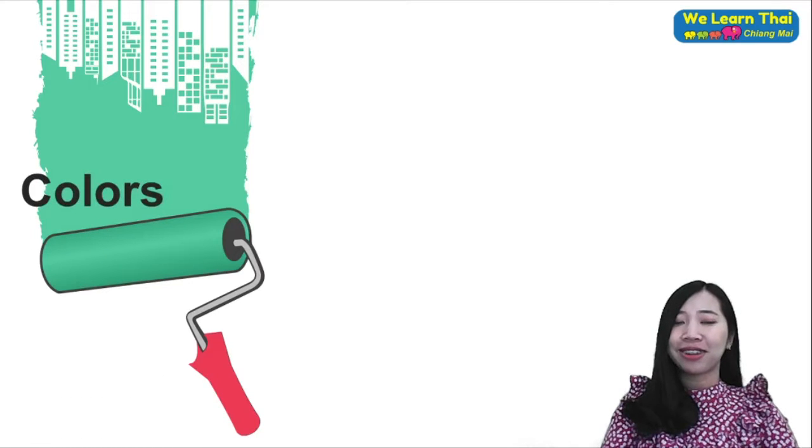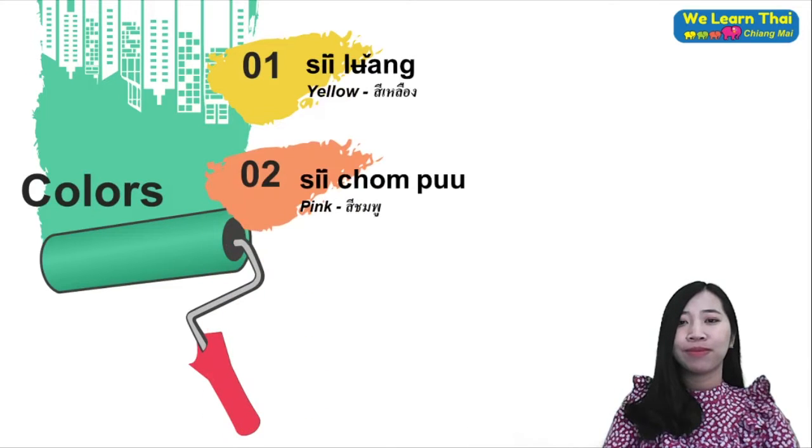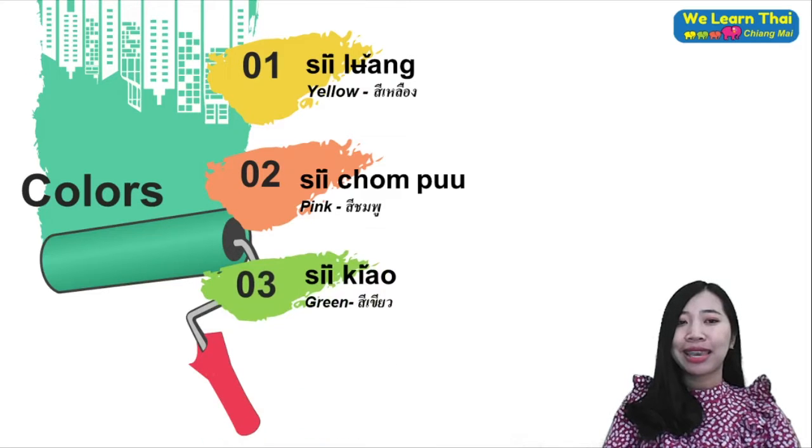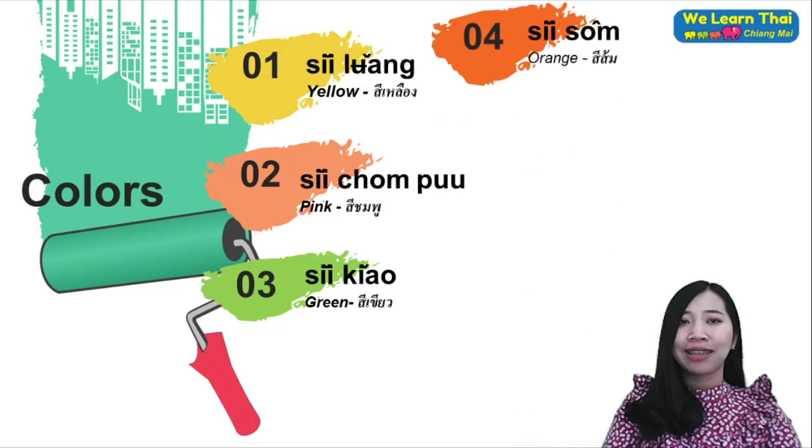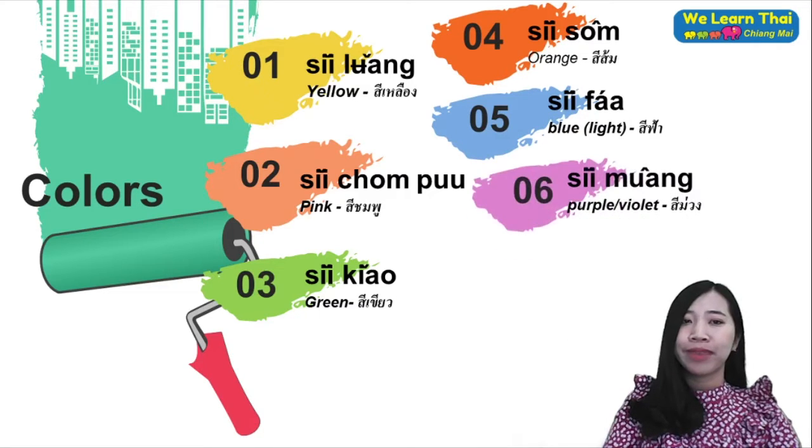For colors: the first one, yellow is see leuang, pink is see chompoo, green is see kheow, orange is see som, sky blue is see fah, purple or violet is see muang, red is see dang.